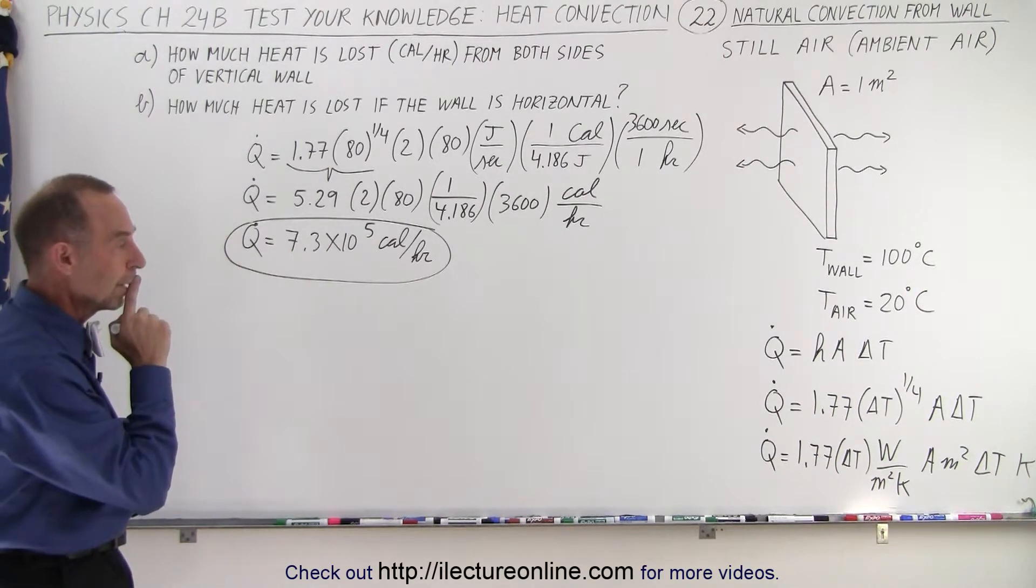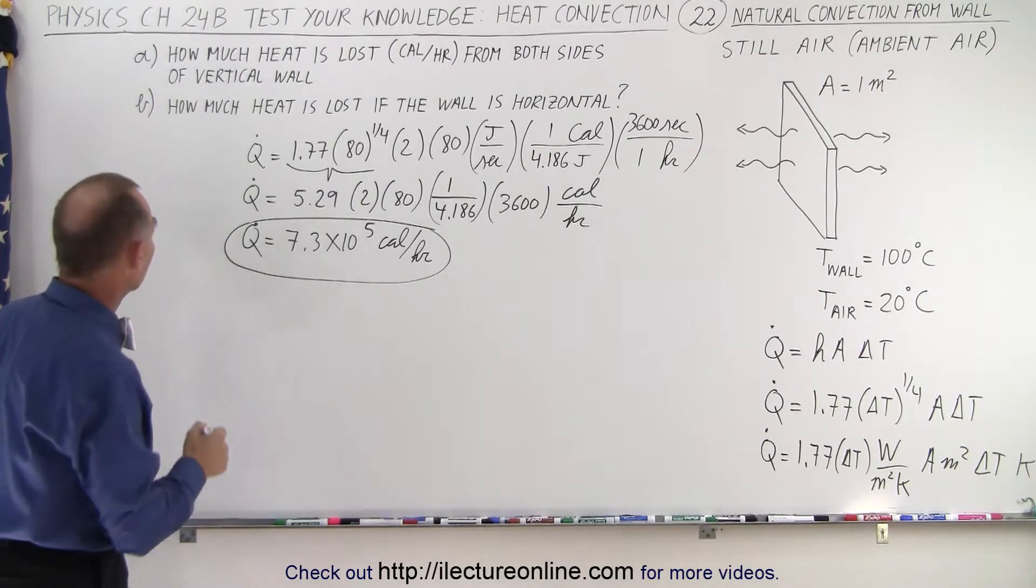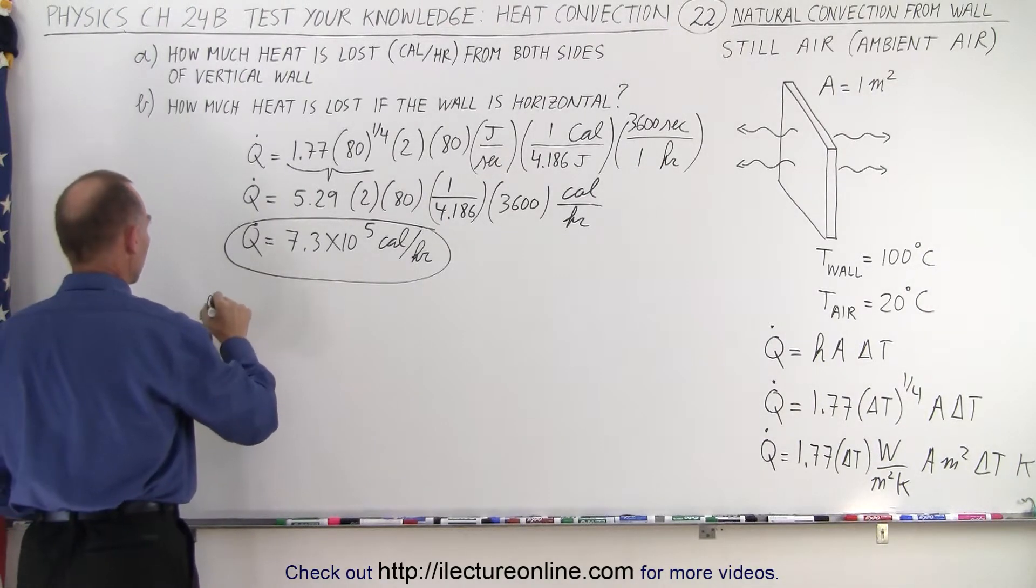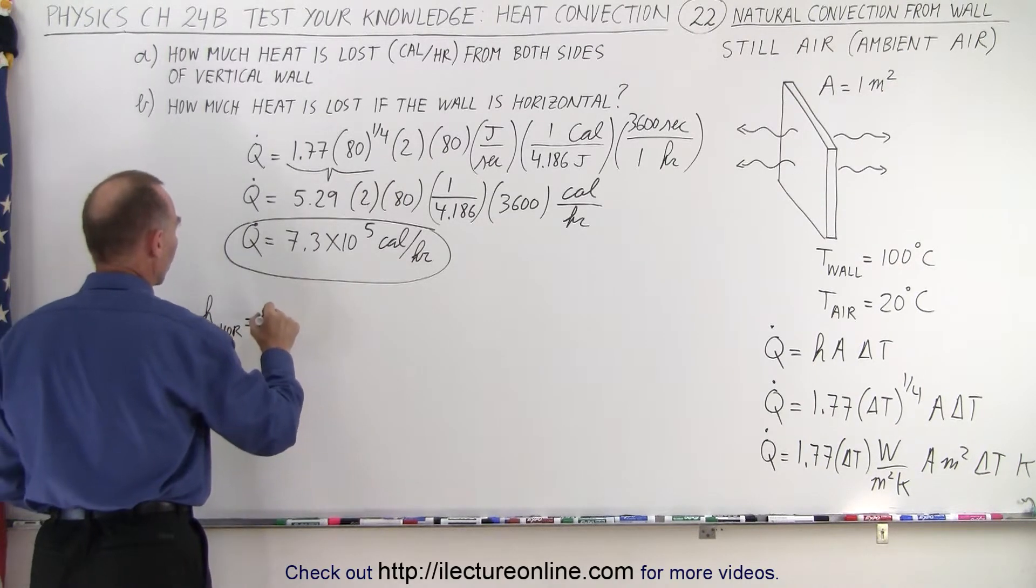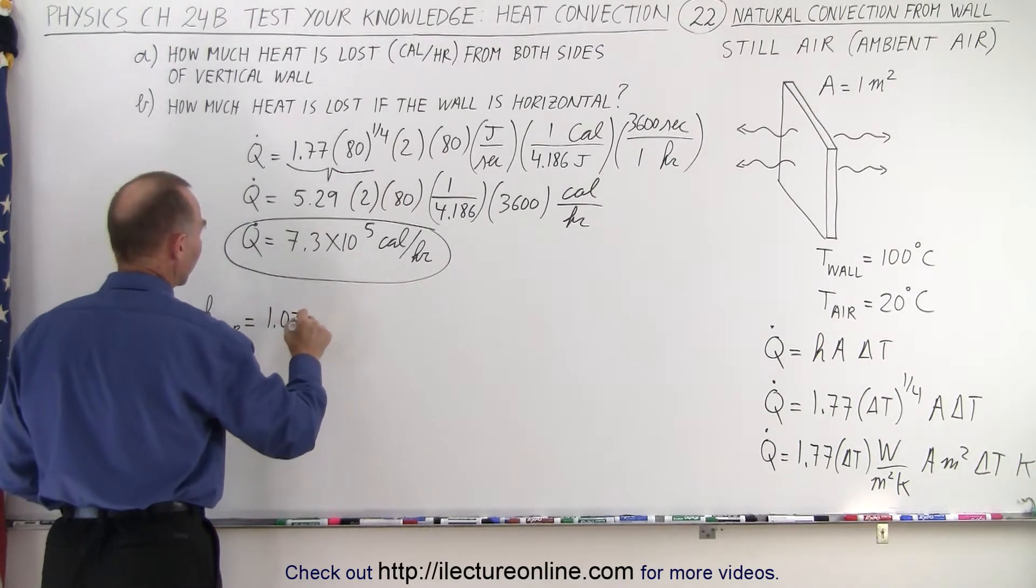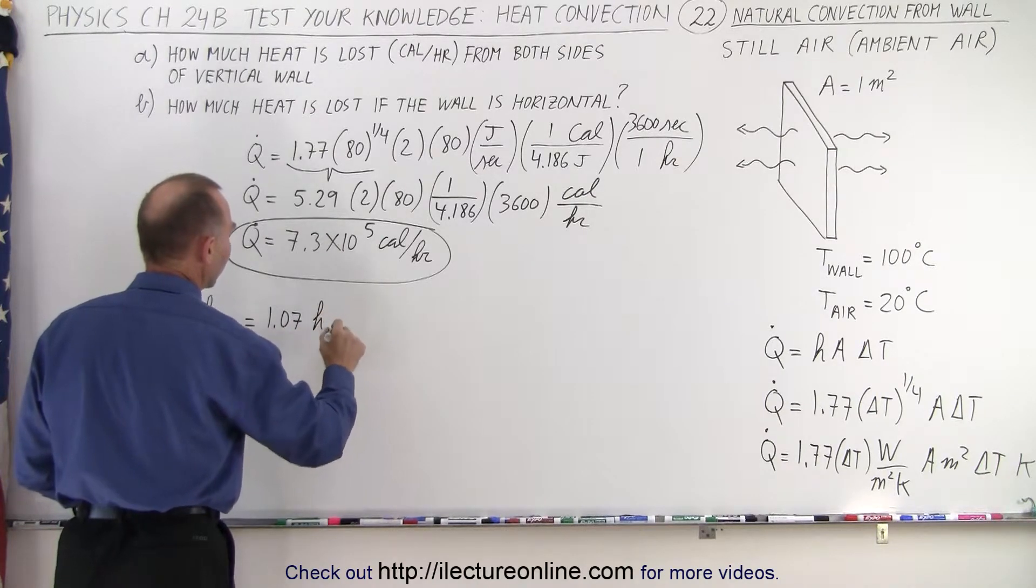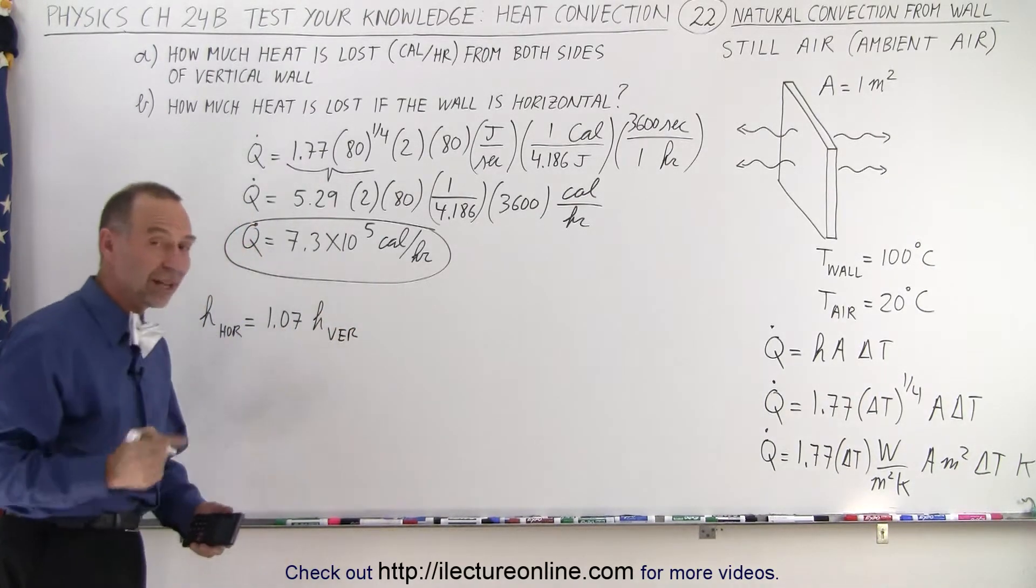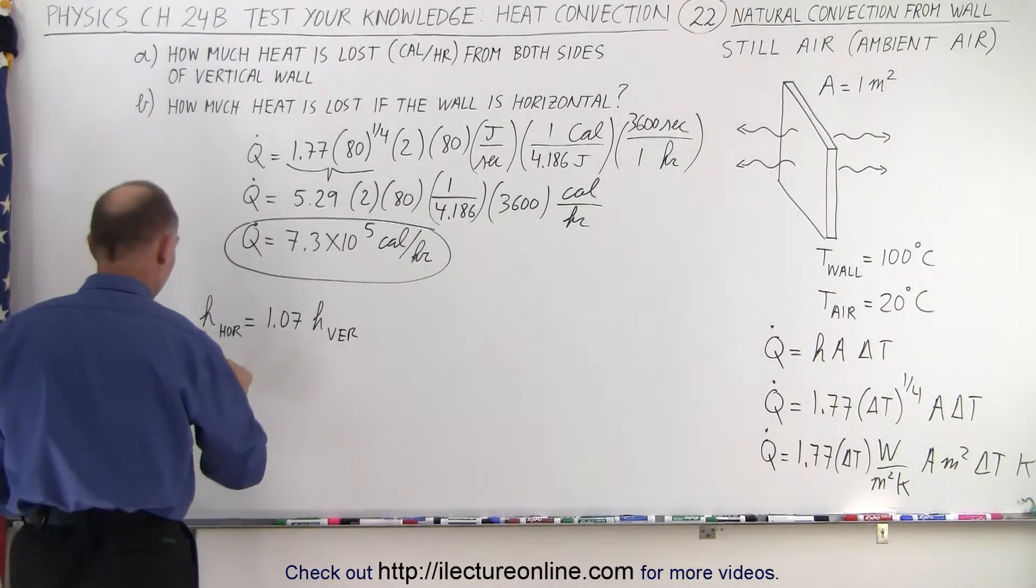Now, what if the wall was horizontal? Well, it turns out that H for a horizontal wall is about 1.07 times H of a vertical wall. In other words, about a 7% increase, which means that therefore, for a horizontal wall, Q dot.